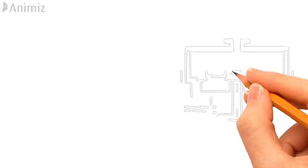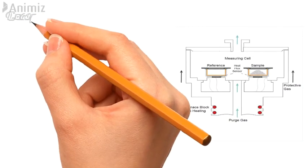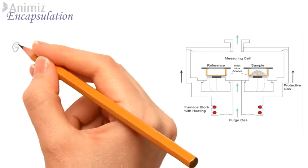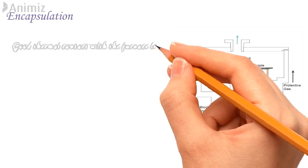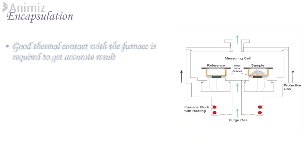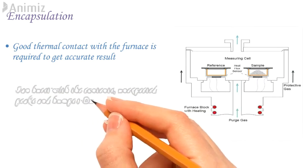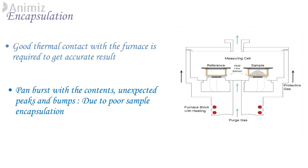Practical issues with DSC. First, Encapsulation. Encapsulation is necessary to prevent contamination of analyzer and to make sure that sample is contained and in good thermal contact with furnace. One of the most annoying sights after a DSC run is to find a pan burst with content all over the furnace or unexpected peaks and bumps in DSC traces with no real cause or problem remaining. Such errors can be due to poor sample encapsulation which is one of the most important areas to be considered in order to obtain good data.